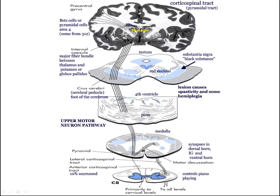With the corticospinal tract, if you make a cut in the spinal cord, you're going to affect movement on the same side of the body, because the decussation or crossing is rostral to where the injury would be.